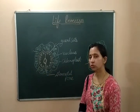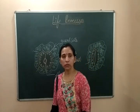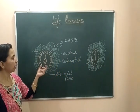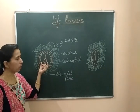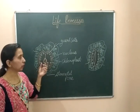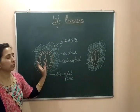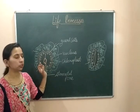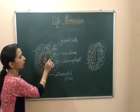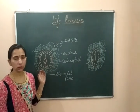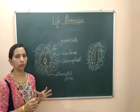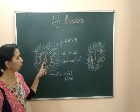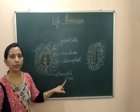Now let's discuss the structure of stomata. Stomata are the pore structures which are surrounded by the guard cells. These guard cells are kidney bean shaped. These two guard cells cover a pore which is known as the stomatal pore.